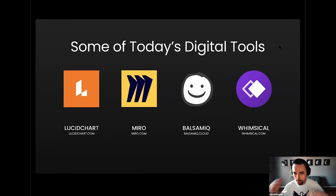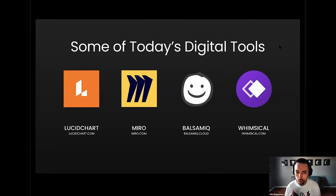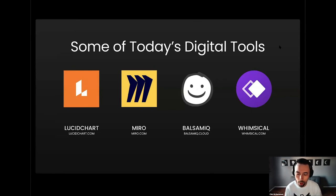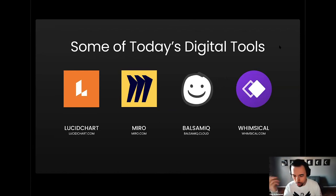There are a lot of tools in this space today. These are some of the tools we use at Headway: LucidChart, Miro, Balsamiq, and Whimsical, which I'll talk about today. Miro is one of the tools we use in conjunction with Whimsical quite a bit. These are four examples of tools that could help you take your idea from a napkin sketch or just an idea in your head to something digital that you can share.